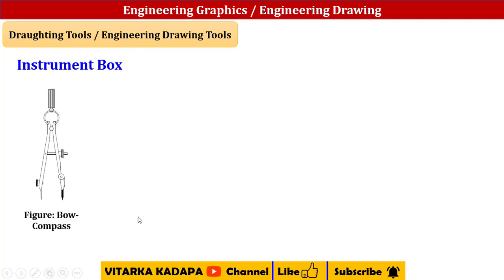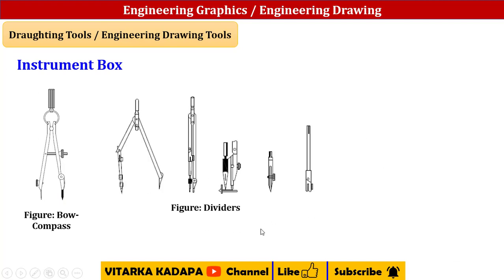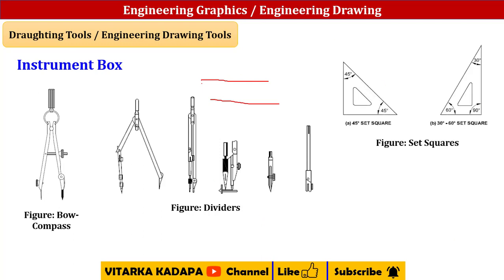Next, the instrument box. In the instrument box we have the bow compass, which consists of one sharp edge and one pencil edge. Next are the dividers — we can see multiple dividers. The basic function of a divider is to transfer the length from one point to another point. For example, if I have a line and I need to transfer its length to another paper, I measure it with the divider and transfer the exact length. So the advantage of a divider over a compass is the transfer of length.